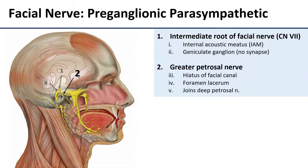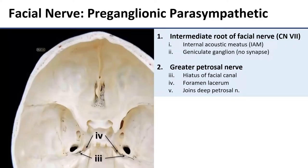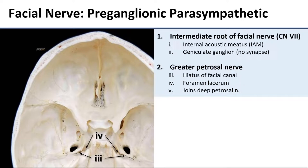Inside the temporal bone, those parasympathetic fibers are going to branch off from the major branch of the facial nerve as the greater petrosal nerve, and then they're going to head out on their own. The greater petrosal nerve takes a convoluted pathway out of the cranium. It ends up coming back out of the temporal bone inside the cranial cavity through the hiatus of the facial canal, which is this little crack right down here, and then it runs a short way across the middle cranial fossa to exit again through foramen lacerum.